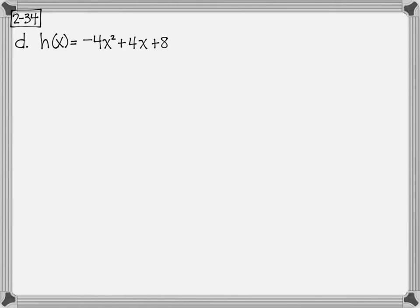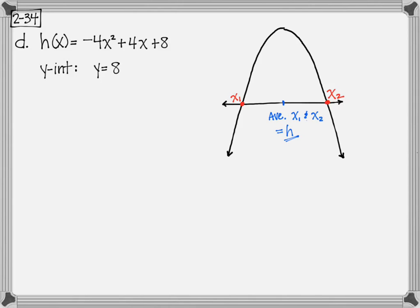For part d, we've got h of x, and note that our a is negative 4. So we have a negative a winning a downward parabola. And if we look at the y-intercept, and look at where does that line that goes through the y-intercept equal, where does the line intersect the parabola, and we've got x sub 1 and x sub 2, once again, the midpoint between those would be the h, the average of that, because we have the line of symmetry that goes through h, and that's going to help us find our vertex.